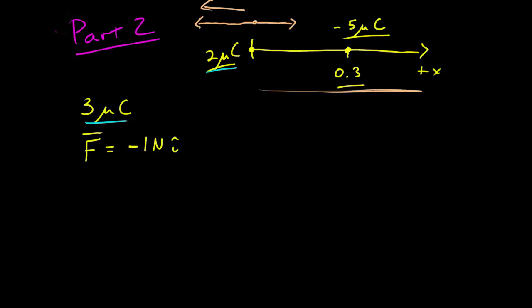So where exactly is it going to be? We know that the negative five micro coulomb charge exerts a positive force, so the force that the new charge exerts must be greater. But it also has less charge than the negative five. Coulomb's law says the magnitude of the force is proportional to the charge, so at the same distance this three micro coulomb charge would exert a smaller force. However, it's also inversely proportional to separation, so we can bring it closer so it exerts a larger force on the charge at the origin. Let's call this position x.